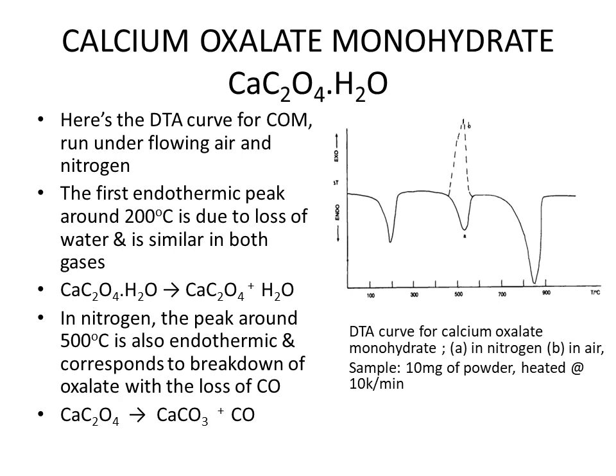We can see different peaks in the curve. The first endothermic peak appears at around 200 degrees centigrade and is similar in both nitrogen and air environments. This peak corresponds to the loss of water, where the water molecule is removed from the monohydrate.